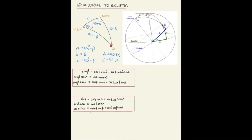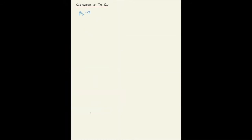One interesting application is that we can set the ecliptic latitude to zero to find the equatorial coordinates of the sun. By definition the sun is in the ecliptic so its latitude is zero. The equations then become: sin δ = sin ε sin λ; cos α cos δ = cos λ; and sin α cos δ = cos ε sin λ.